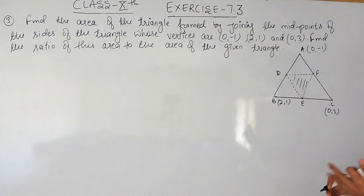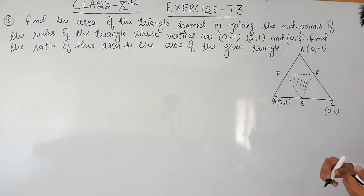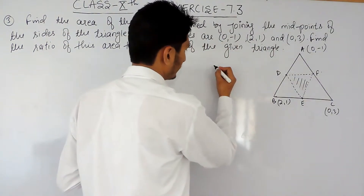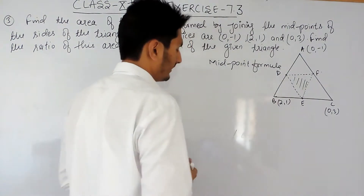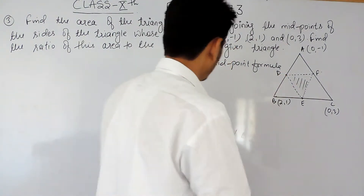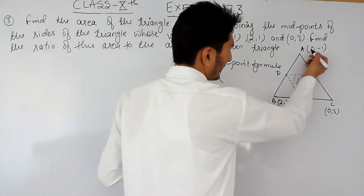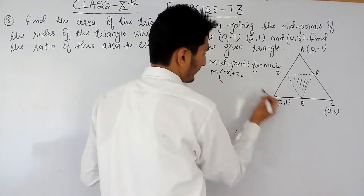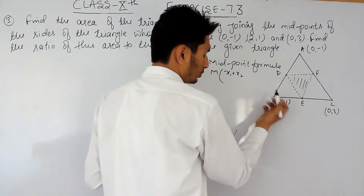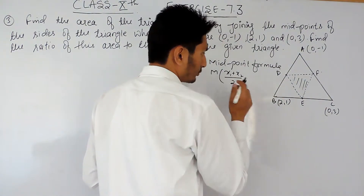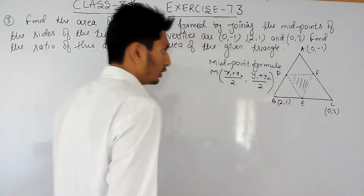Using the formula to find the area, we first need the midpoint coordinates. The midpoint formula: if we have two points (x1, y1) and (x2, y2), the x-coordinate of the midpoint is (x1 + x2) / 2, and the y-coordinate is (y1 + y2) / 2. This is the midpoint formula.